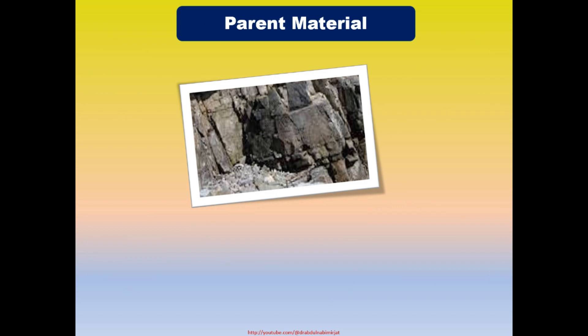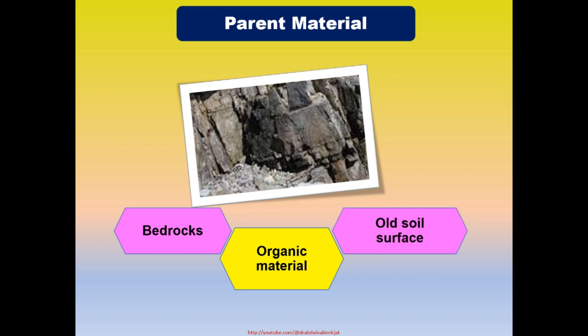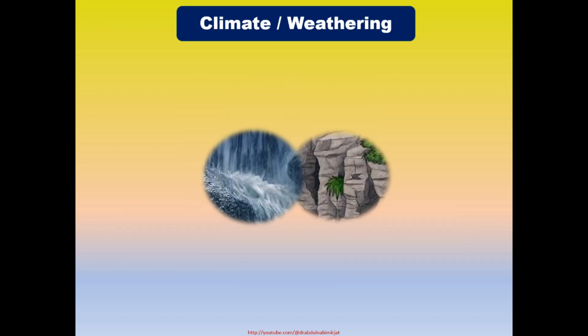Parent material for soil formation indicates bed rocks, organic material, old soil surface, or deposits from water, wind, glaciers, and volcanoes, or even material moving down a slope, which will also be considered as parent material. Bed rocks are converted into sediments by weathering, and finally into soil by other factors.